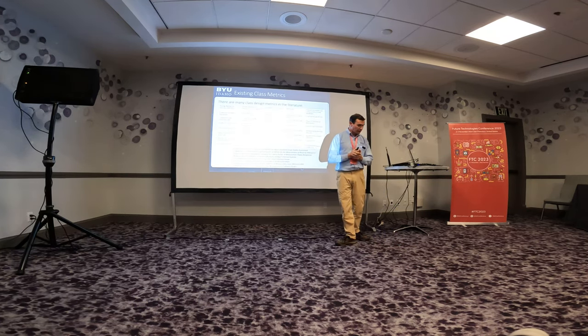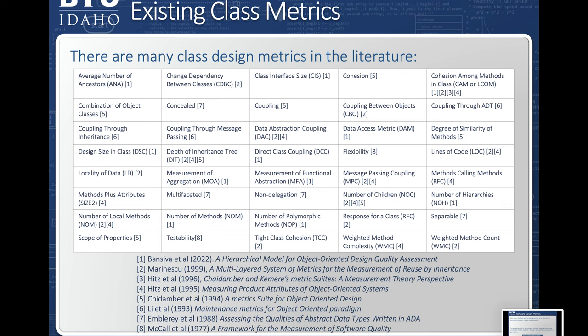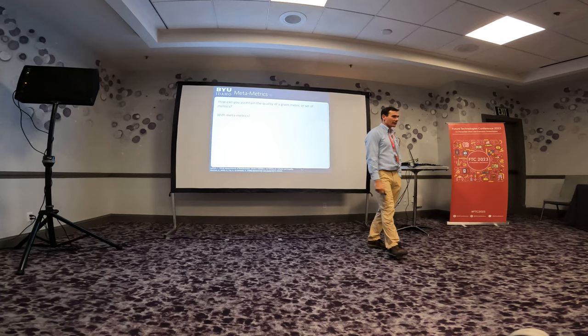I did some research to discover what the current metrics are in the literature about class design and object-oriented design, and there is a plethora of them. The question is: which one is the right one, or what combination, or which ones don't really inform you about what distinguishes a good design from a bad one? To evaluate those metrics, I need to come up with metametrics.